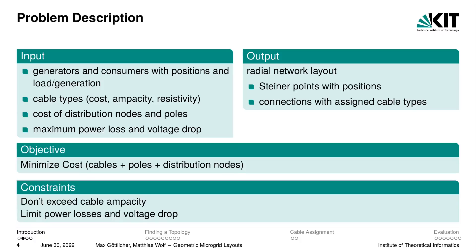As output we expect a radial network with Steiner points and connections, and these connections are each assigned cable types. We optimize for cost — we want to find the minimum cost layout — and the cost consists of the cost of cables, poles and distribution nodes. The minimization is constrained by the cable capacities and by the power loss and voltage drop in the whole network.